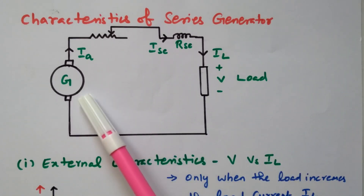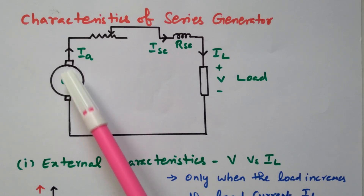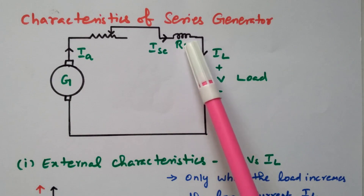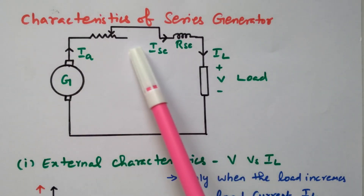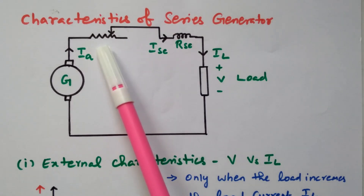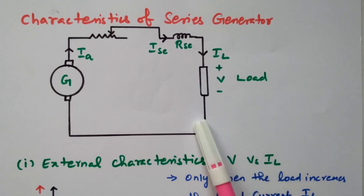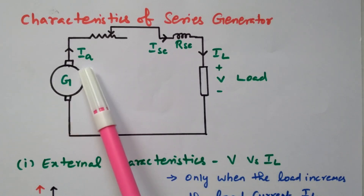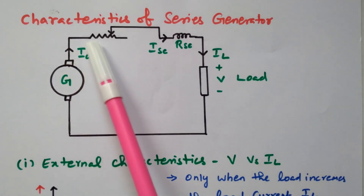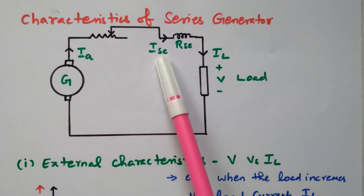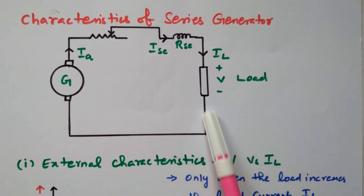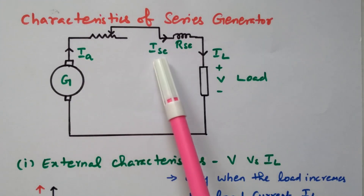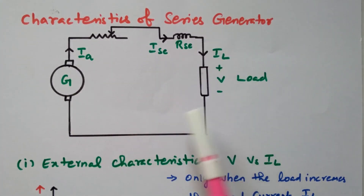Now we will see the diagram. This is the generator — the rotating part — and this is nothing but a brush. The field coil is available; all are connected in series. In order to control the current flowing through the armature, a resistor is available — by adjusting that we can control the flow of current. This is the load terminal, and V is the load voltage.